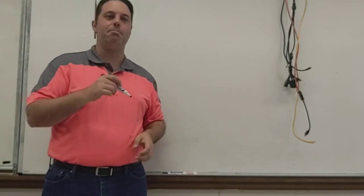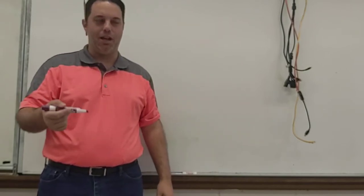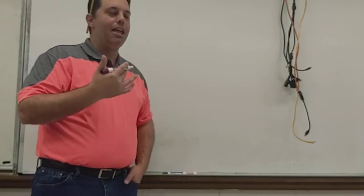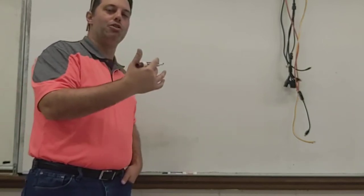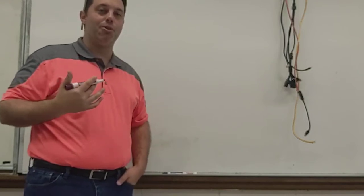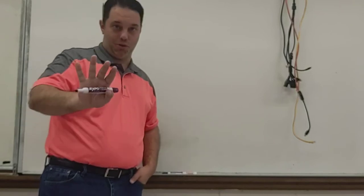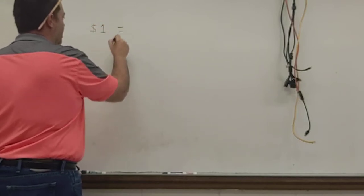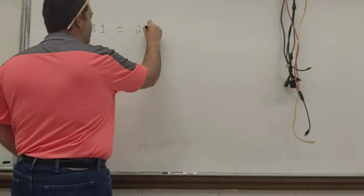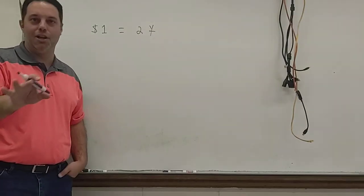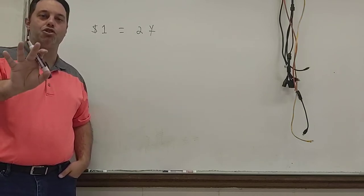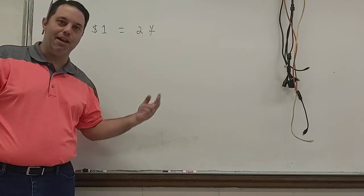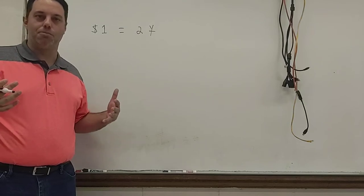So that's always the first thing that you have to understand is which two currencies you're comparing. The second thing, and this is what trips people up probably the most frequently on this, is when you're looking at an exchange rate, if it takes more of one currency to equal the other currency, then that means that other currency is getting stronger. And let me show you what I mean by this. Let's say that we have a situation where one dollar is equal to two Japanese yen. One dollar equals two yen. Which currency is stronger at this point? We say, probably the U.S. dollar because one of ours equals two of theirs. Then that means our dollar is probably relatively stronger.